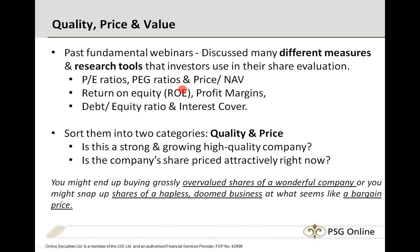It comes down to three things: quality, price, and value. You'll ask yourself two questions — is this a strong, great quality company, and is the share price attractively priced? If you don't answer both questions, you might end up buying an overvalued share in a great company, or buying shares in a hopeless business you think is a bargain. So it's the two together — quality and value combined.